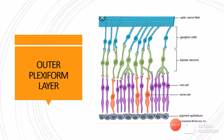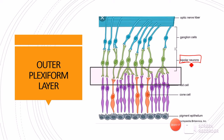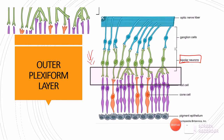Next is the outer plexiform layer. The photoreceptors — rods and cones — synapse with the bipolar neurons. The synapses formed between them consist of axons and dendrites which look like a plexus. There is no nucleus present in this layer, only a plexus of axons and dendrites, so it is called the outer plexiform layer.